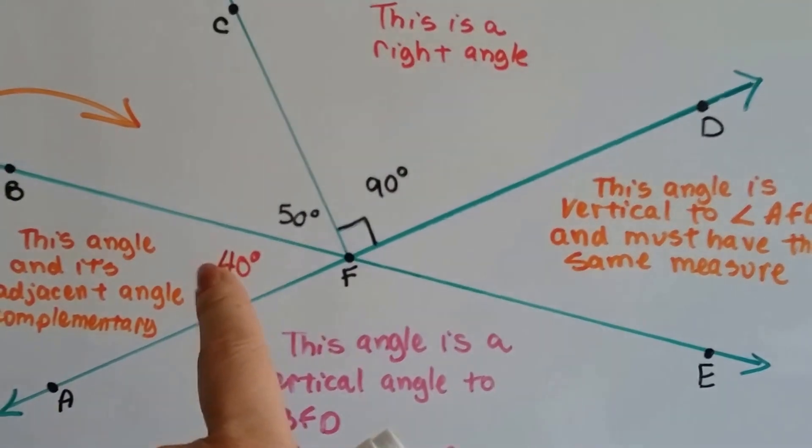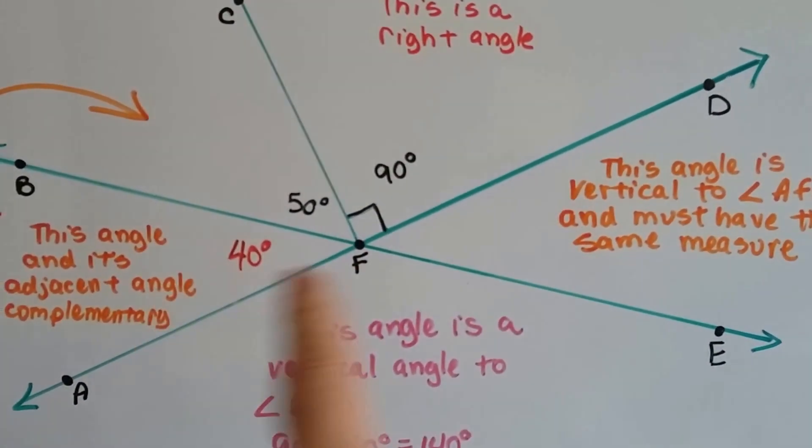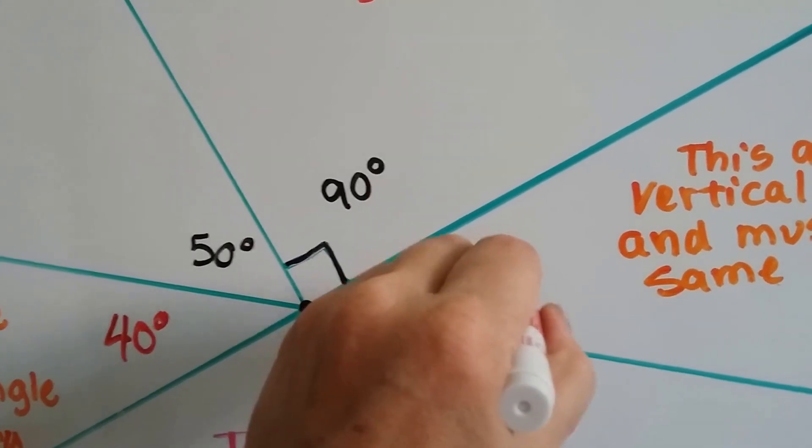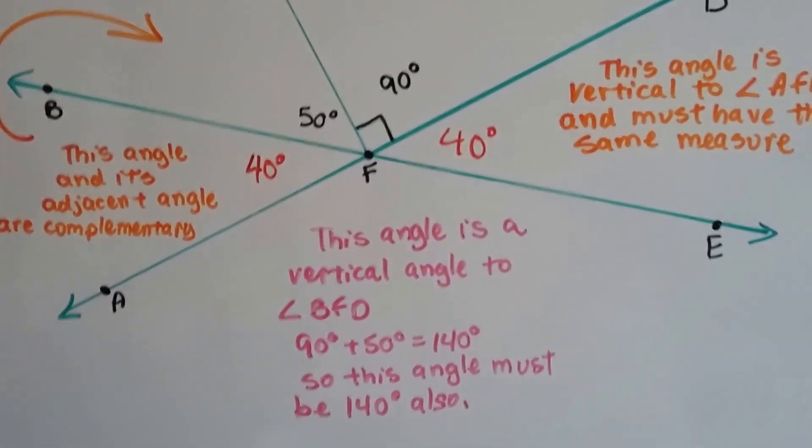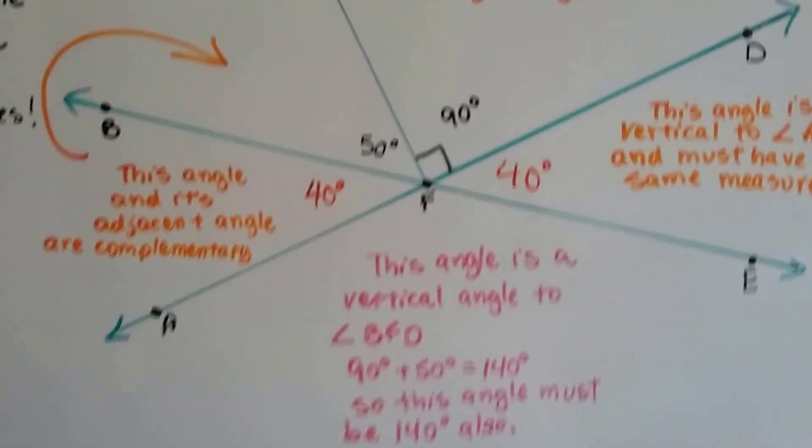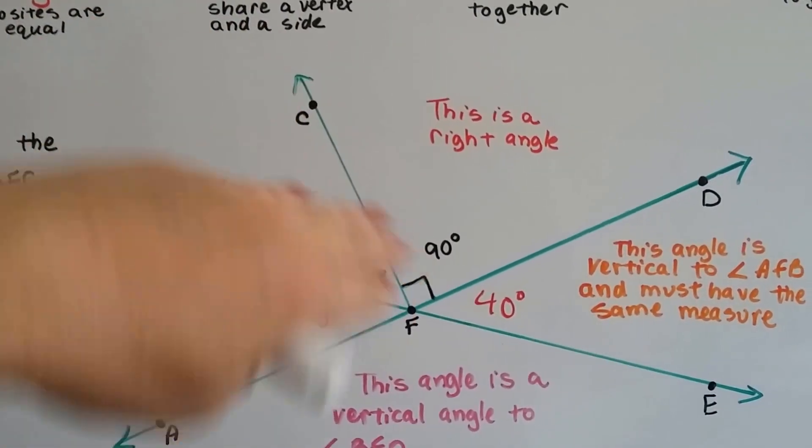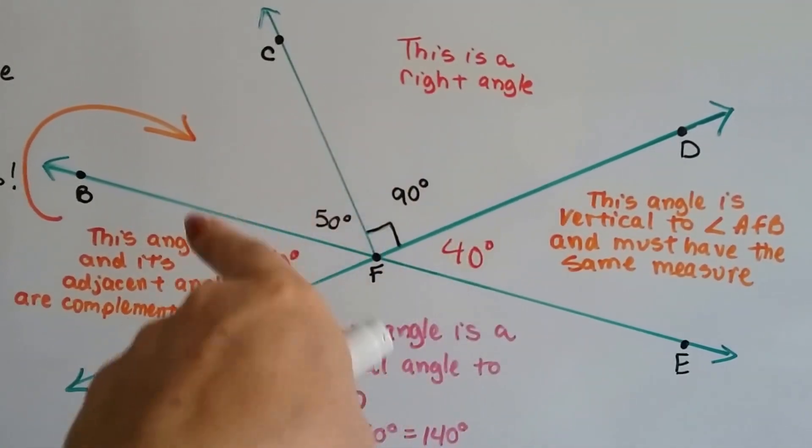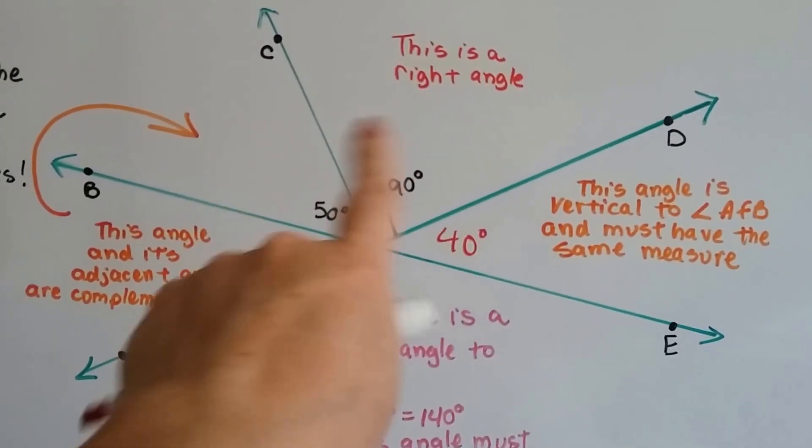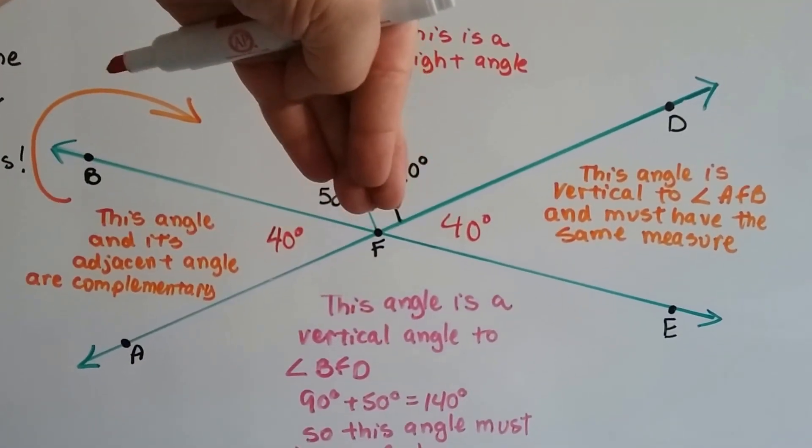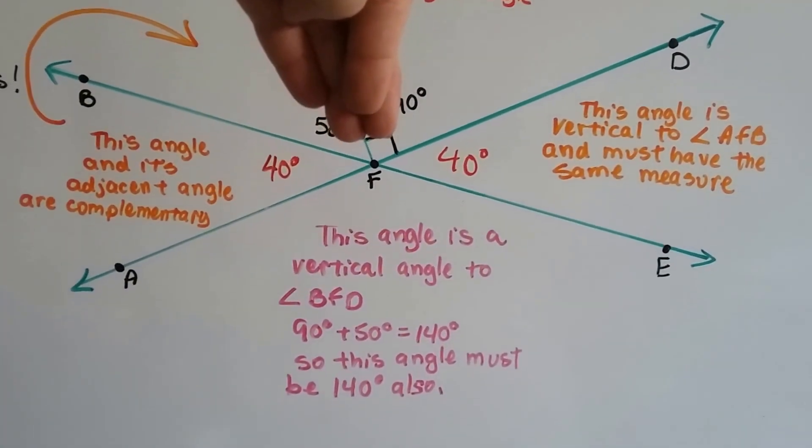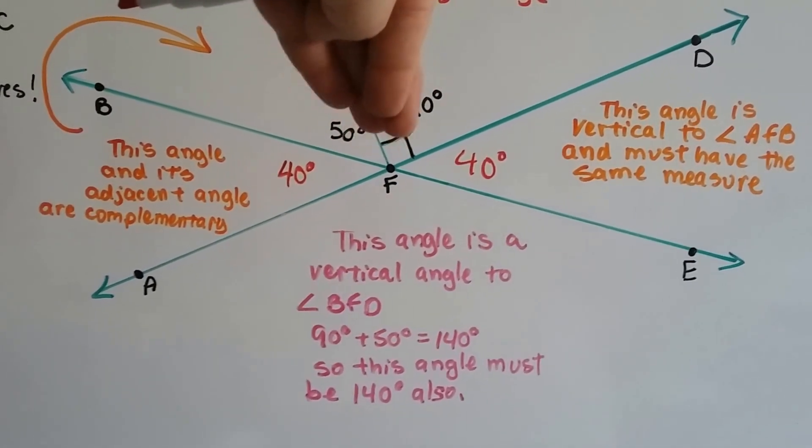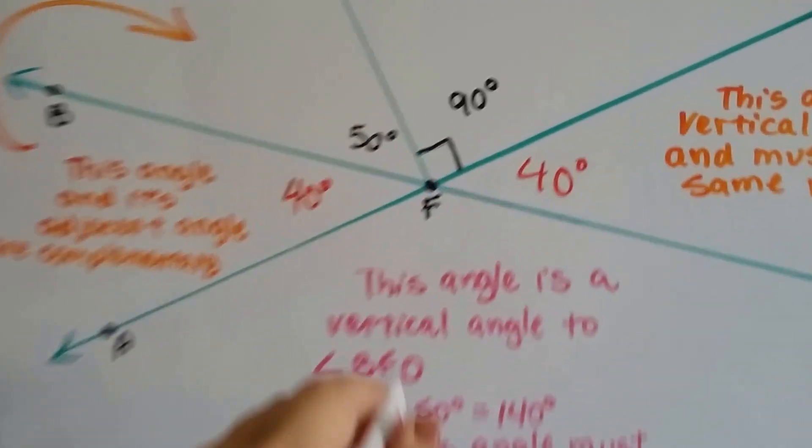Now, because this one is vertical to this one, they're the same measure. So if this one's 40, that one's got to be 40. Now we know the measure of that one. So what about this angle? Well, if we got rid of this line right here, remember, we would be able to see that this measure right here, this 90 and 50, this 140 would be vertical to the pink angle, to this area. So because they're opposite each other, and this one totals 140, this one must be 140.